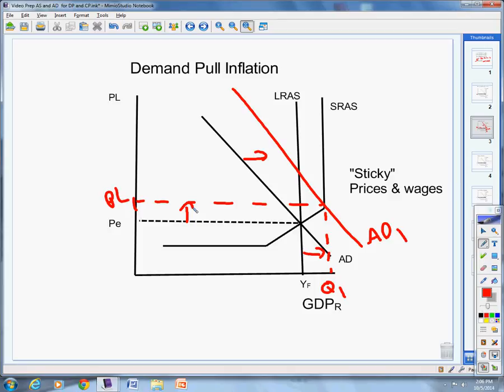How does this happen? How do we get beyond long run aggregate supply? Well, the reason we do is because in the short run, prices and wages are sticky. In other words, as soon as inflation rises, suppliers don't immediately increase prices. Wages don't immediately go up.